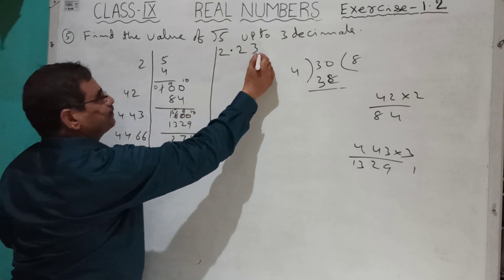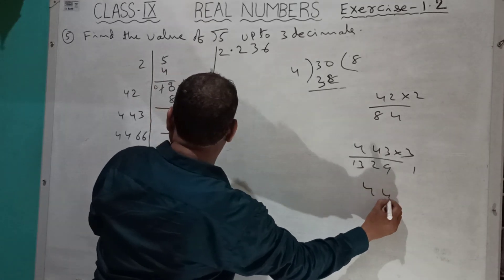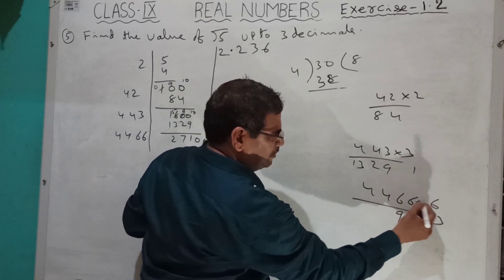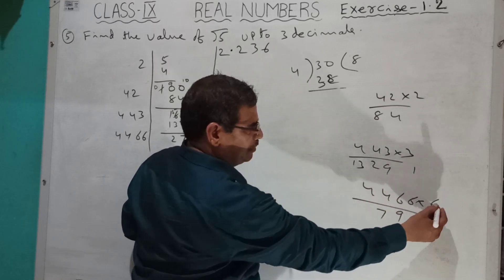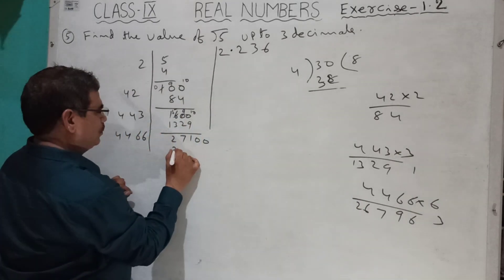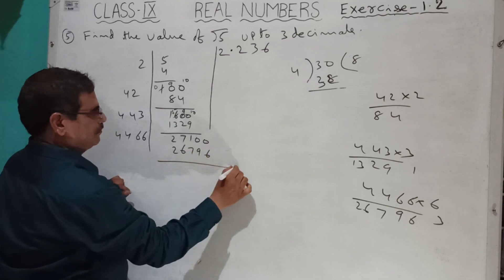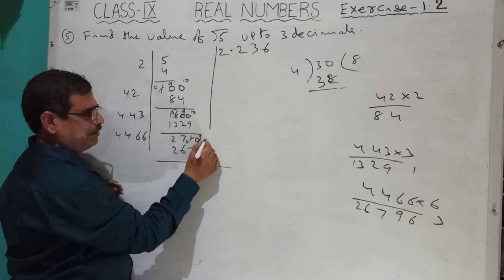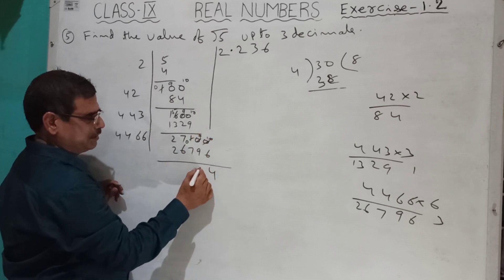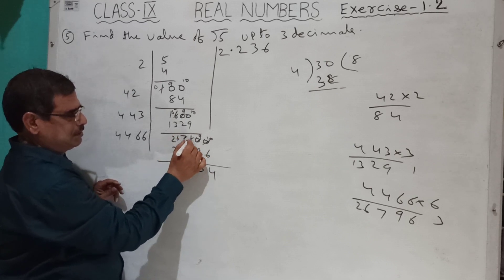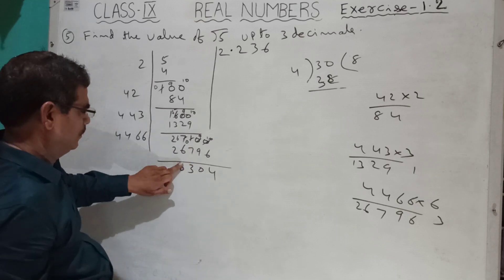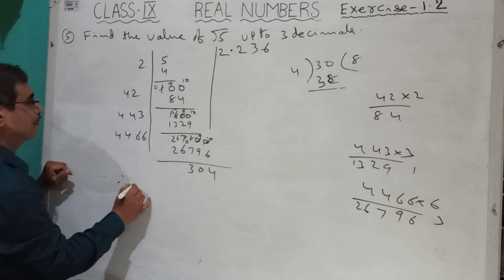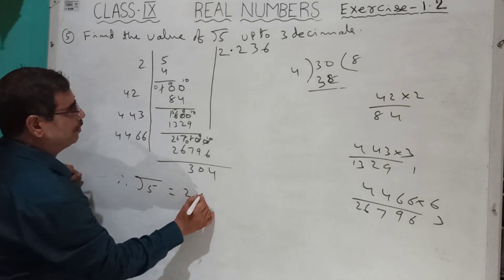So I am writing 6, here also 6. 4466 into 6: 6 sixes are 36, 6 sixes are 36, 39; 6 fours are 24, 27; 6 fours are 24, 26. So 2679 — wait, 2796. I have to subtract. Here 0 means nothing, here 1 — I cut here. 0 will be there, here 9, here 10. 10 minus 6 means 4; 9 minus 9 — borrow 6; 10 minus 3 means 7; 0. So 3 — not 4 is there. He is asking up to root 5 to 3 decimals — 3 decimal places. Therefore, root 5 is equal to 2.236.